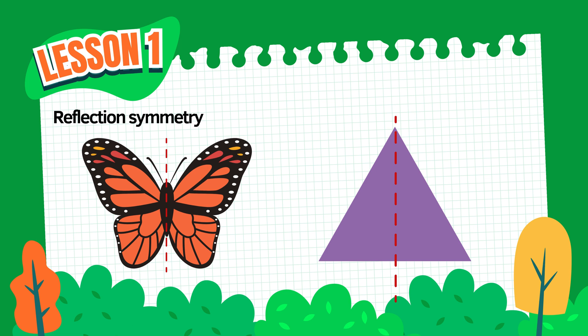If we place a mirror down the center of its body, the left wing reflects the right wing—perfectly balanced. Now take a look at this triangle. If we draw a line from the top point straight down the middle, one side reflects onto the other side. This shows that the triangle also has reflection symmetry.